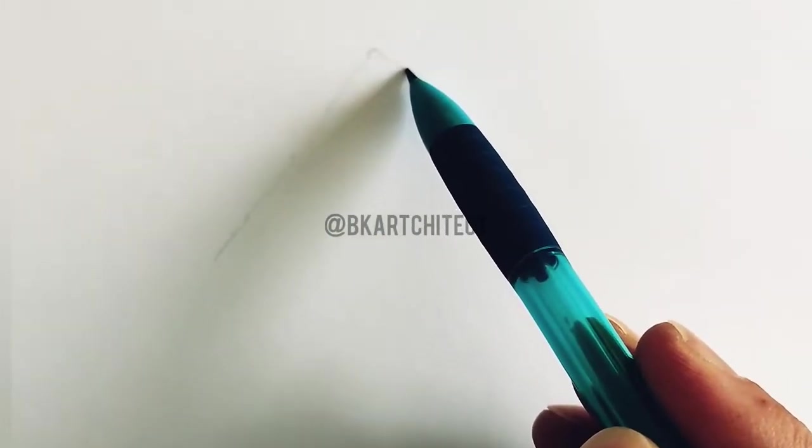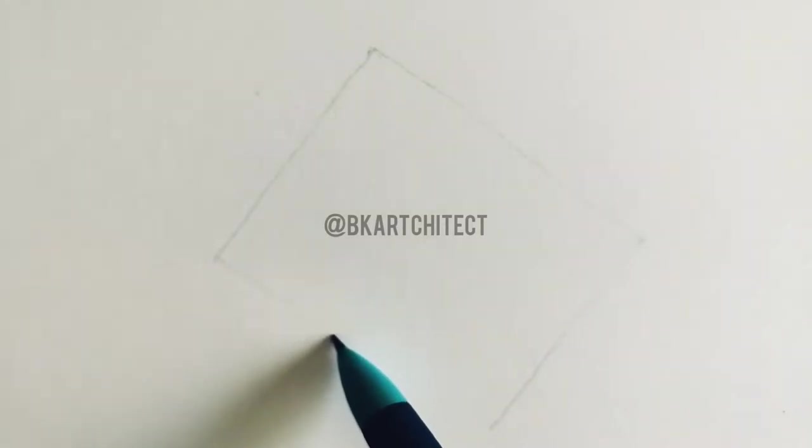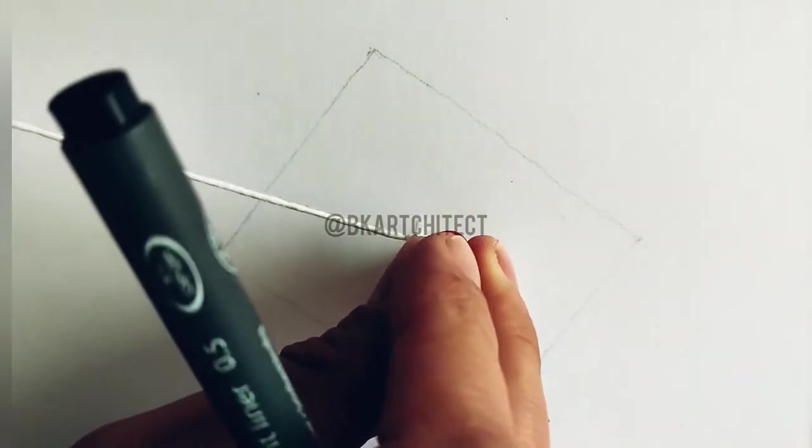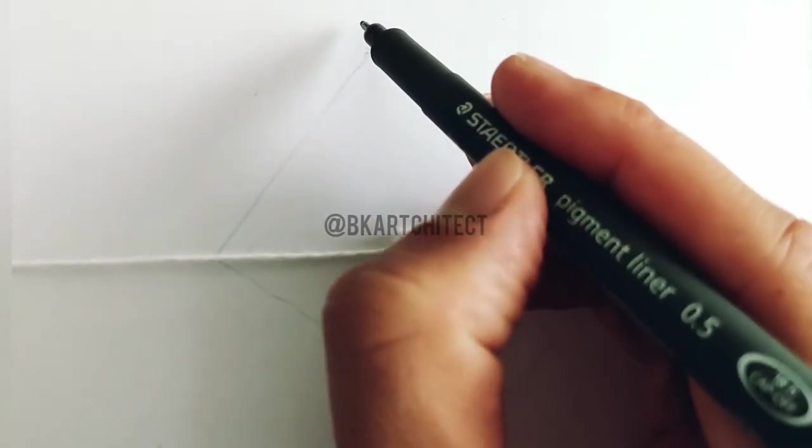Hello and welcome to this tutorial on how to use a string and a pin to draw a one point perspective. The first thing I did here was just drawing a square in any angle that I chose.